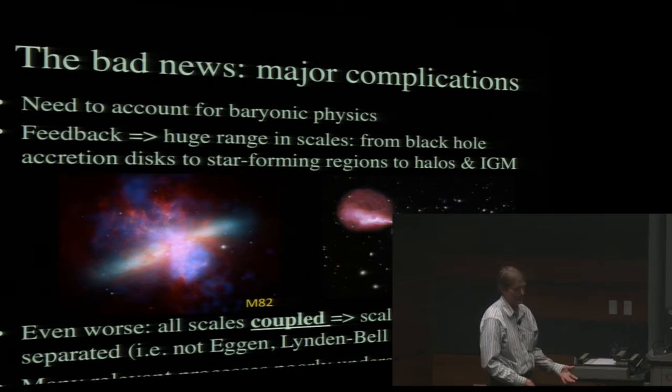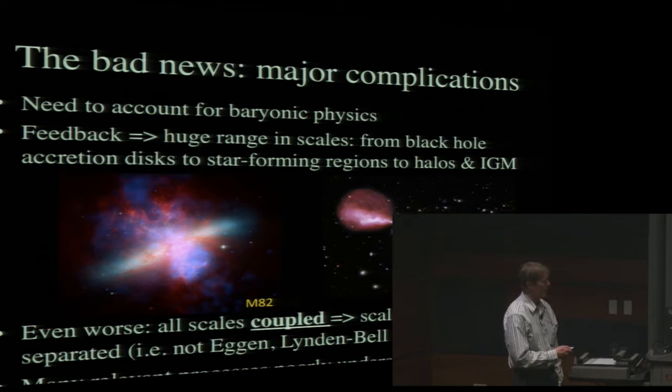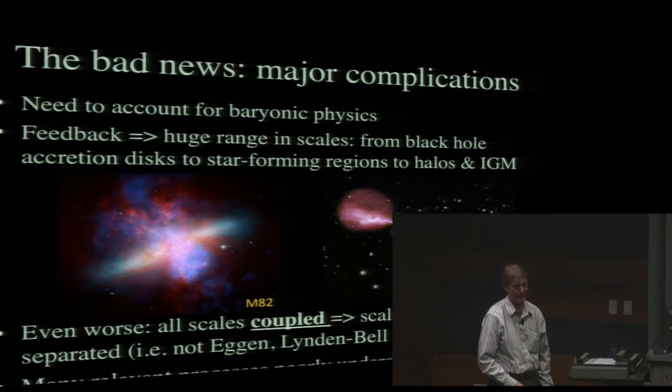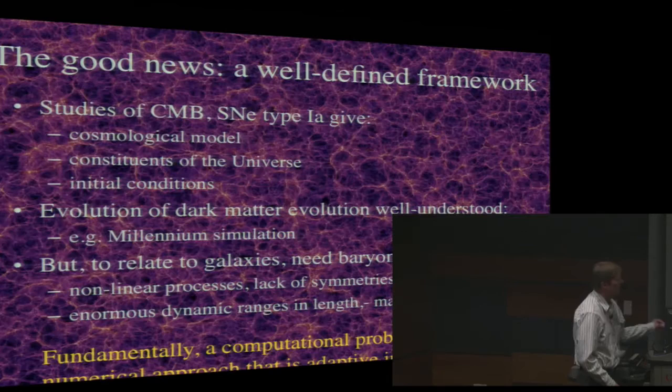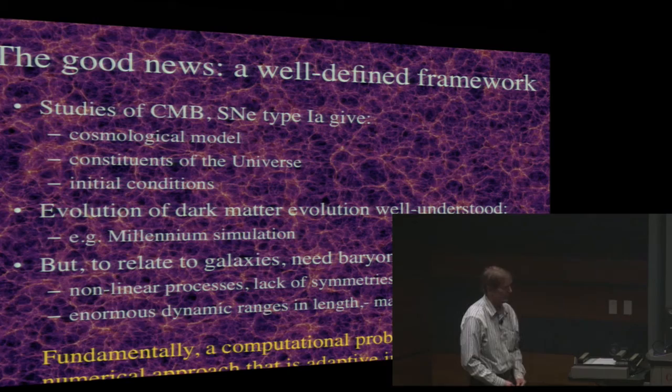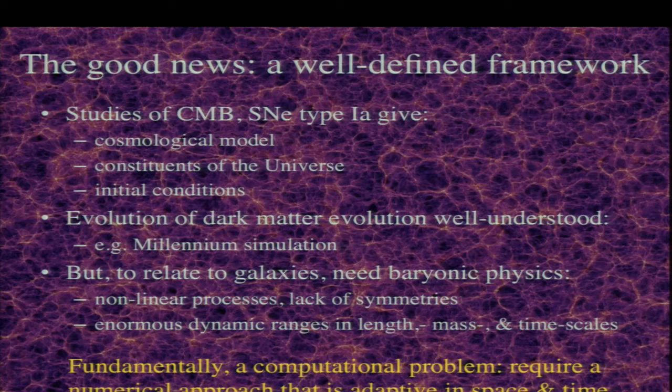On top of the scale problem, many of the physical processes occurring here are just not very well understood. We don't really understand in detail how star formation can produce these giant outflows or how supermassive black holes produce these relativistic outflows that can affect the surroundings of these galaxies. However, there is some good news. Observations done over the past 20 years, especially the cosmic microwave background, have provided us with a well-defined framework for the overall cosmological evolution of the universe.